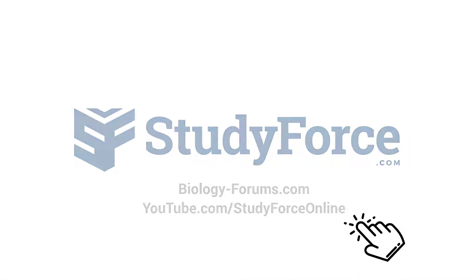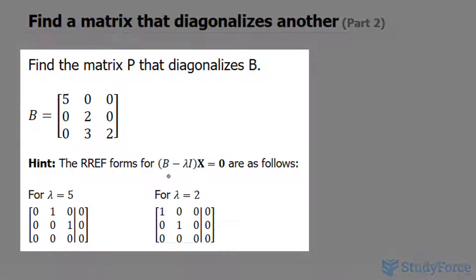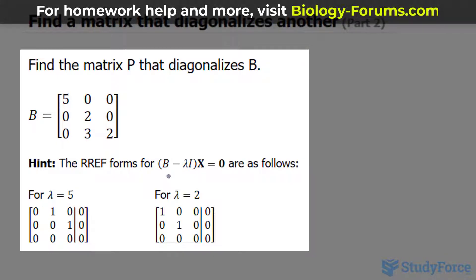Welcome back everyone to part 2 of this series where we learn how to find a matrix that diagonalizes another. And to do this we'll be looking at eigenvalues and vectors. This time the question reads, find the matrix P that diagonalizes B.